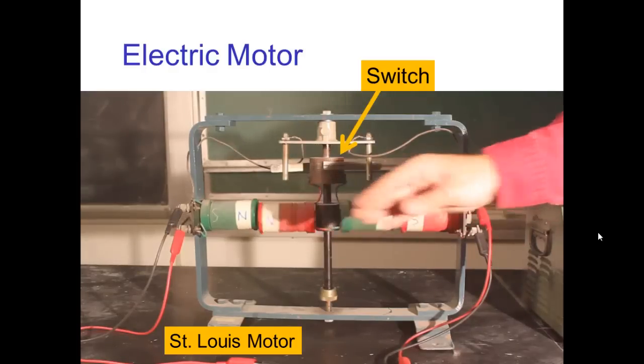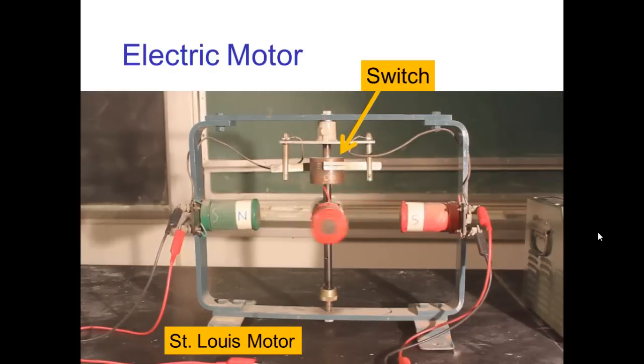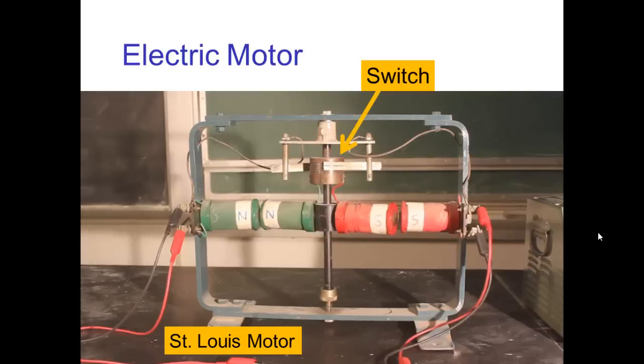So, I'm going to turn on this simple motor and I'll explain the operation here in a moment, but let's just watch it, notice that there's a switch at the top of the motor and as I'm increasing the current, the motor is spinning faster and faster.